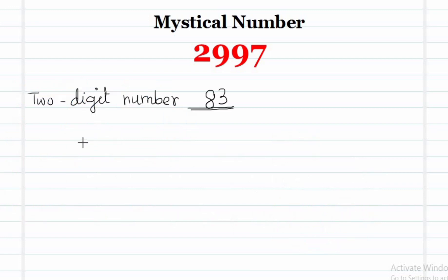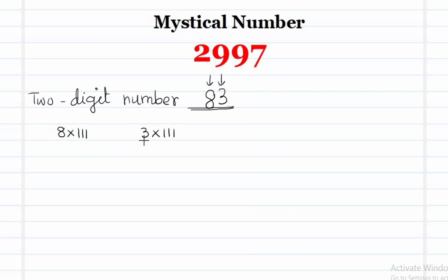We now consider the two digit number 83. What are the digits? 8 and 3. We multiply 8 by 111 and 3 by 111 and add them up, so that we get 1221.